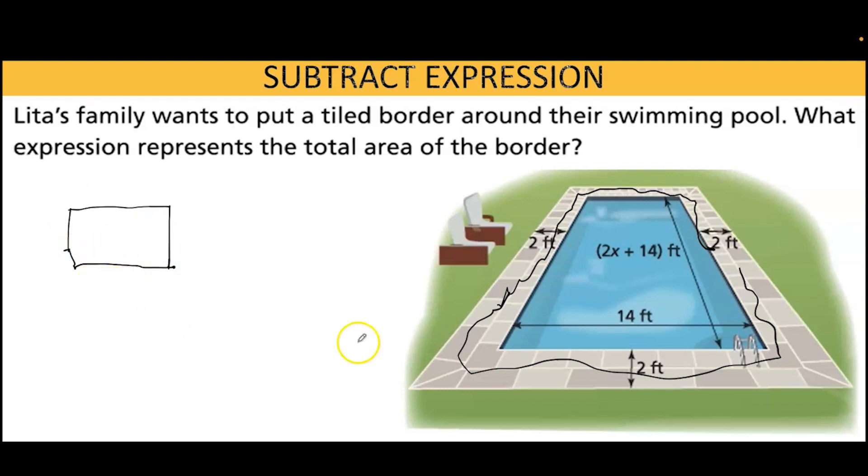with a dimension of 14 plus 2 plus 2, so that's 18. That would be the width. And the length would be 2x plus 14 plus 2 plus 2, so that's 2x plus 18. Those are the dimensions of the larger rectangle.